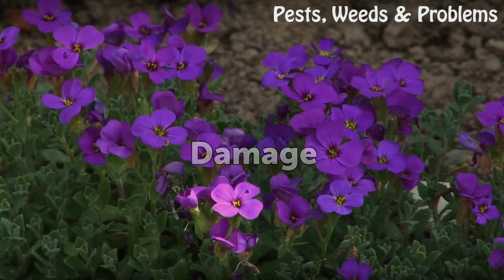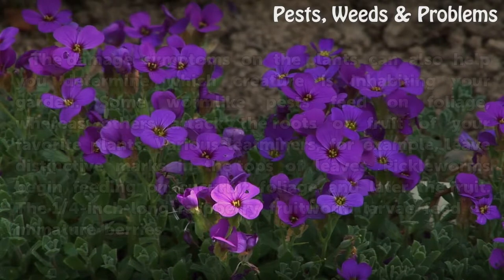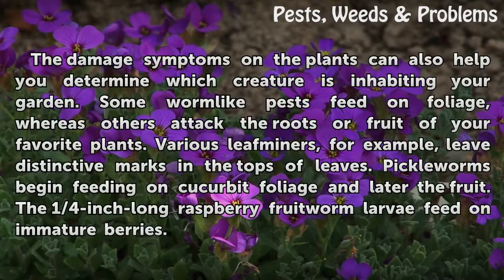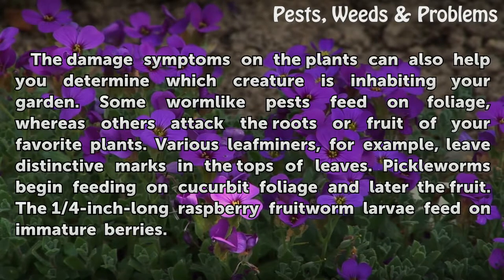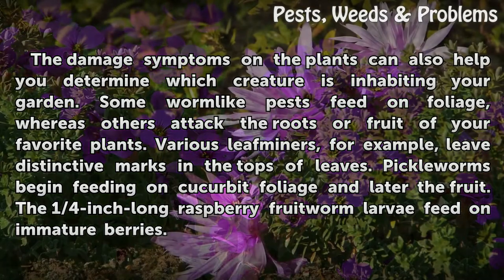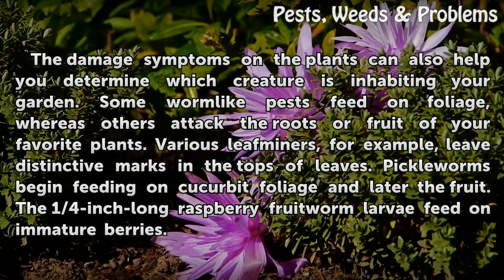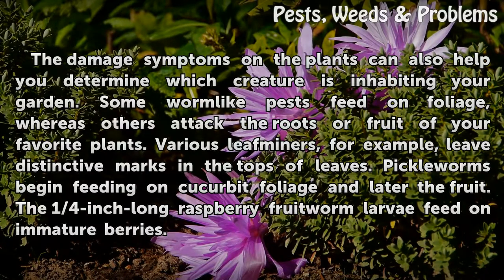The damage symptoms on the plants can also help you determine which creature is inhabiting your garden. Some worm-like pests feed on foliage, whereas others attack the roots or fruit of your favorite plants. Various leaf miners, for example, leave distinctive marks in the tops of leaves. Pickleworms begin feeding on cucurbit foliage and later the fruit. The one-quarter-inch long raspberry fruit worm larvae feed on immature berries.